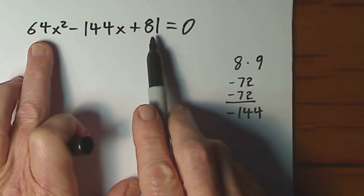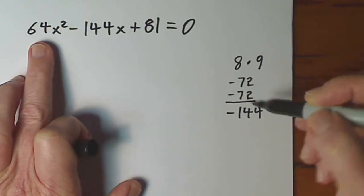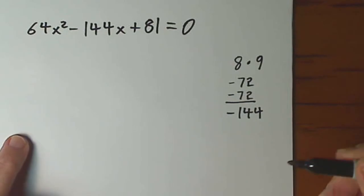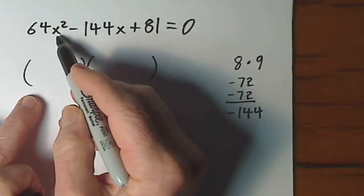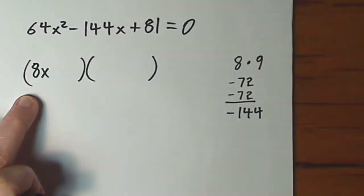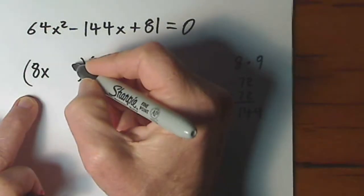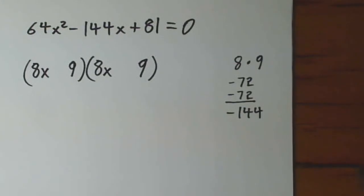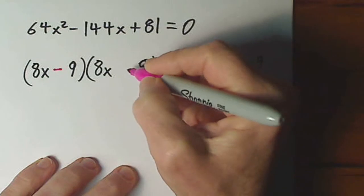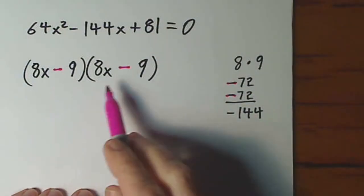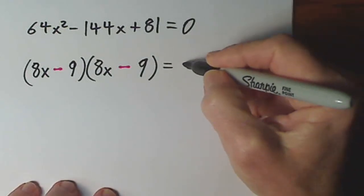You look at the first and last term. If you multiply them and you can add basically the product and get the middle term, then you have a shortcut to solve it. And here comes our solution. The square root of 64x squared is 8x. So I'll put 8x in the first position. The square root of 81 is 9. So I put 9 in the second position. And we figured out that both of these must be negative. So this is the factored form of that trinomial. Okay. It's equal to 0.